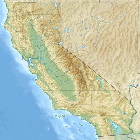The Newport-Inglewood Fault, a part of the San Andreas system positioned near the coast along the western extremity of the Los Angeles basin, is a discontinuous strike-slip fault similar to the San Jacinto fault.